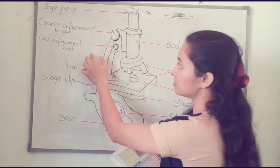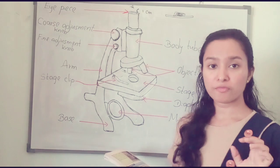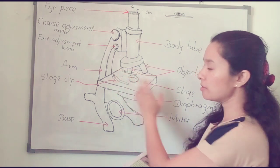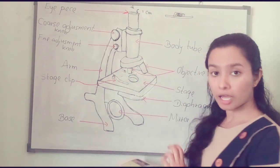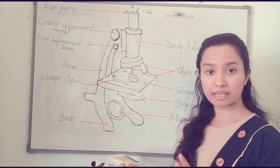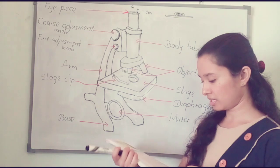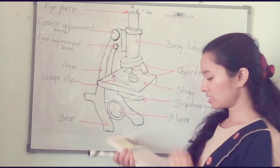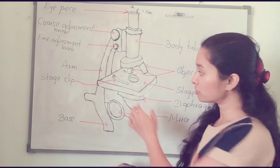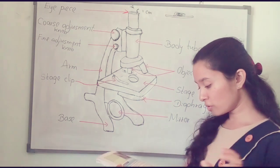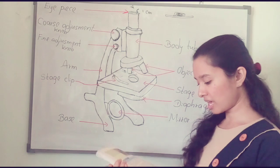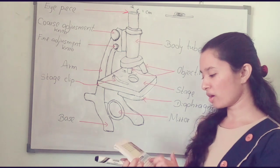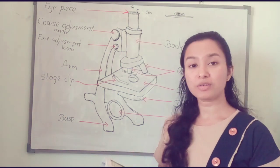Using the fine adjustment, get a clear image of the specimen. You can also switch to the mid power or high power objective lens to observe a clearer and sharper image. After observation, move the low power objective lens upward, remove the specimen from the stage, and wipe the stage with a dry piece of cotton cloth.